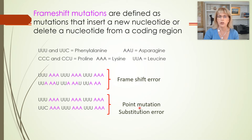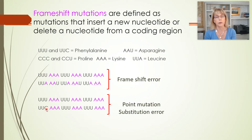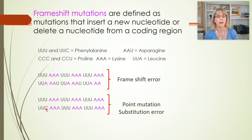Then we learned about point mutations. With point mutations, it is a single nucleotide that's been substituted — switched, so instead of a U, there's a C in this example. Even though a point mutation does change a codon, it does not always change the protein made from that gene, and we were about to talk about why.